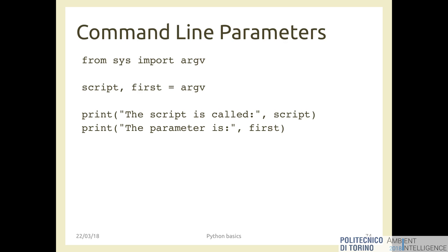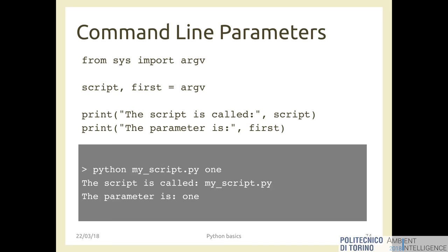If you launch myscript.py with a parameter of 1, you'll have myscript.py in the script variable and 1 in the first variable. If you have more than one parameter, you need more variables: script, second, third, and so on — one for each parameter. This is called unpacking: from one list (argv), you extract multiple separate variables. In PyCharm you can set command line parameters in the run configurations.